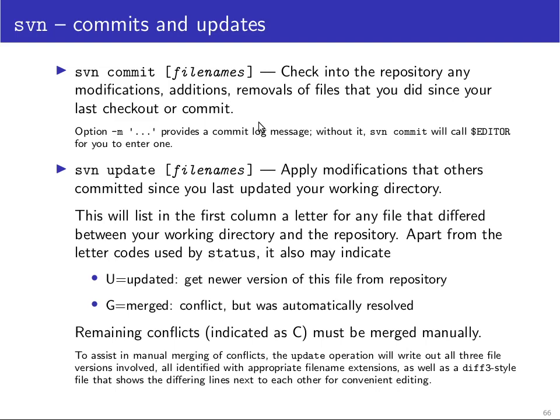Do take these commit comments seriously, because when you look at the log history they can help you quite a lot in finding a particular old version that you want to look at. Then svn update gets and updates your working directory to the latest versions. It will use similar letters as svn status to tell you for each file what kind of modification it has made — whether it added a file, deleted a file, or modified a file. In the case of a modified file, you get a U if a file that wasn't locally modified has been replaced by a newer version.